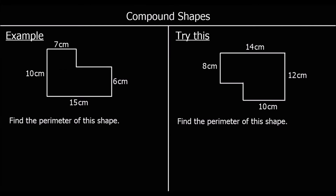This time we have a compound shape and we're being asked to find the perimeter of the shape. The perimeter is the total distance all the way around the edge of the shape.